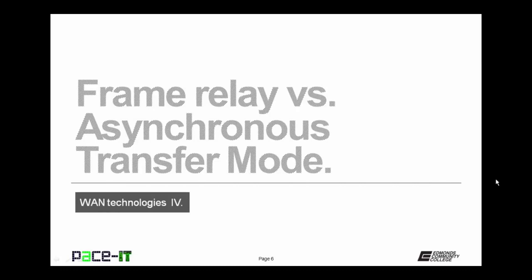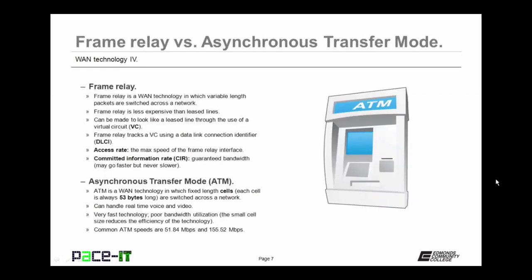Frame relay is a WAN technology in which variable-length packets are switched across the network. Frame relay is less expensive than leased lines but can be made to look like a leased line through virtual circuits — VCs. A frame relay network tracks a VC using a data link connection identifier to identify the ends of the VC. Two terms to know: access rate — the maximum speed of the frame relay interface — and the committed information rate — CIR — the guaranteed minimum bandwidth that a customer receives. The customer is always guaranteed the CIR.